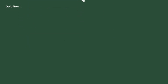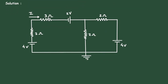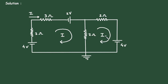Solution. First of all, let us say this is mesh number 1 with current I1, and this is mesh number 2 with current I2. Mesh number 1's current is equal to I, so we can write I is equal to I1.